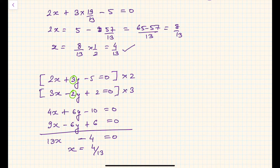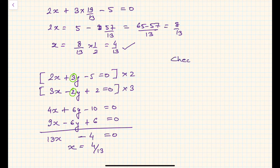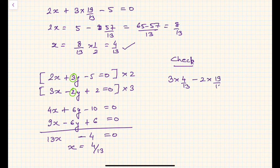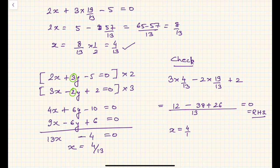Whenever you solve linear equations in two variables, you must check whether you've done it correctly. Let's substitute into the second equation: 3 × (4/13) − 2 × (19/13) + 2. Using 13 as the common denominator: (12 − 38 + 26)/13 = 0/13 = 0, which equals the RHS. So our solution is confirmed correct: x = 4/13 and y = 19/13.